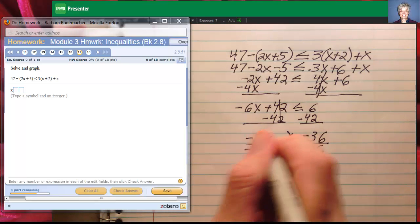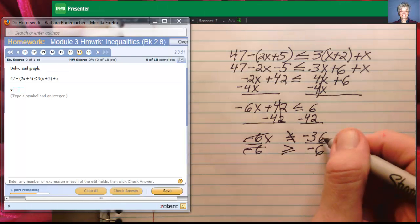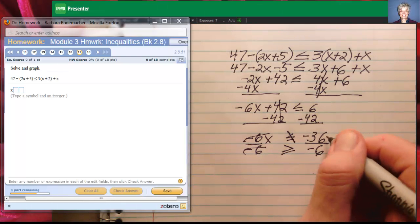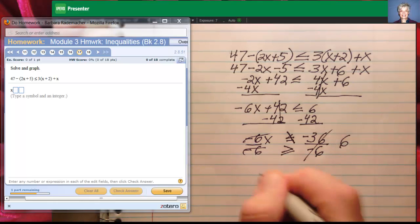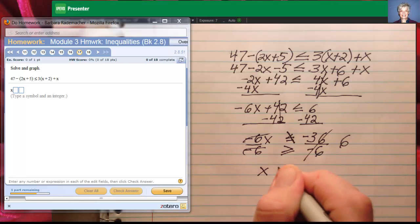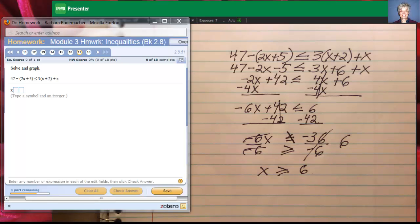So my negative 6s will cancel. And negative 6 goes into negative 36 positive 6 times. So I'll have x is greater than or equal to positive 6.